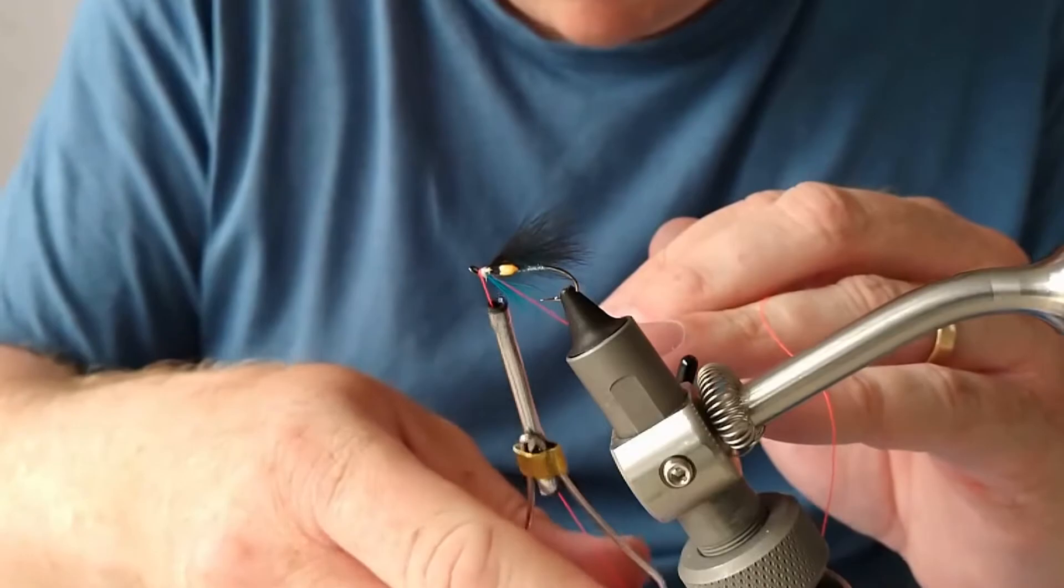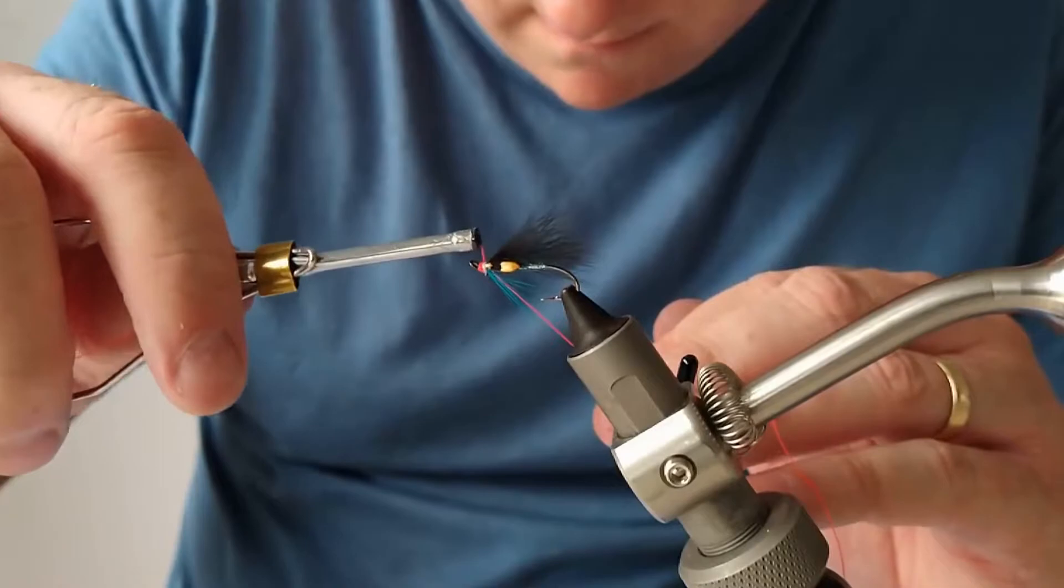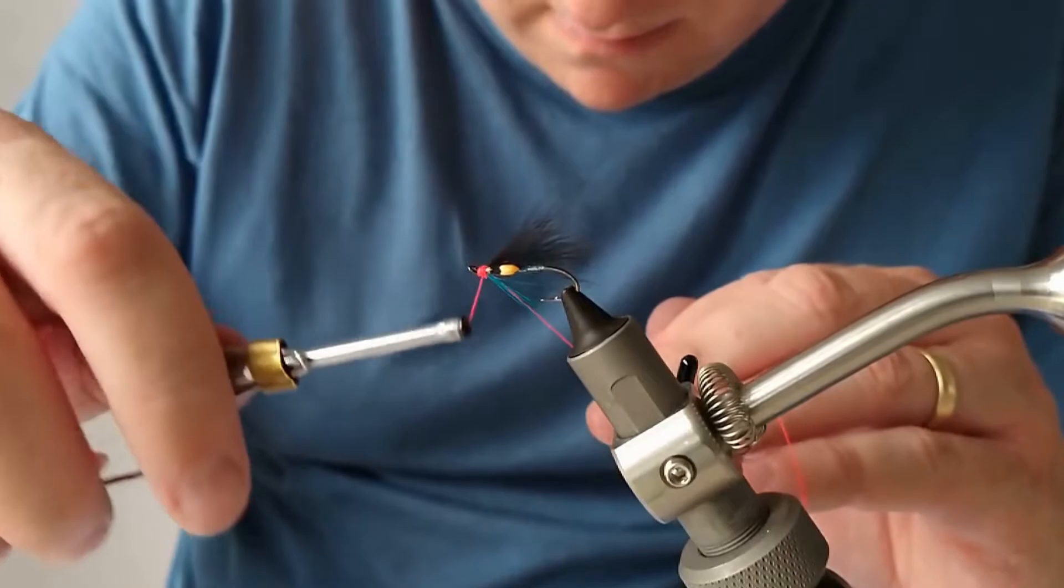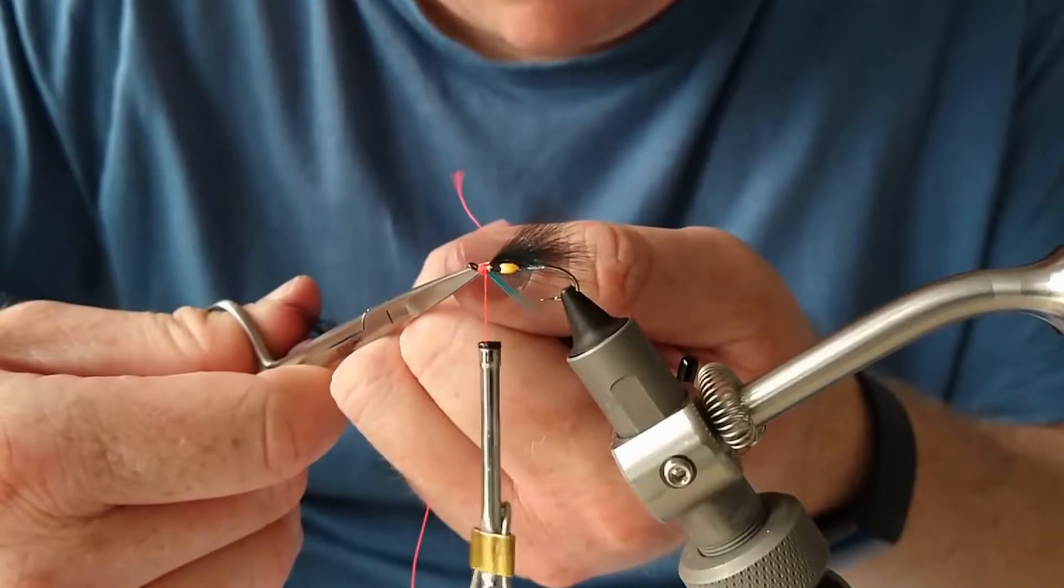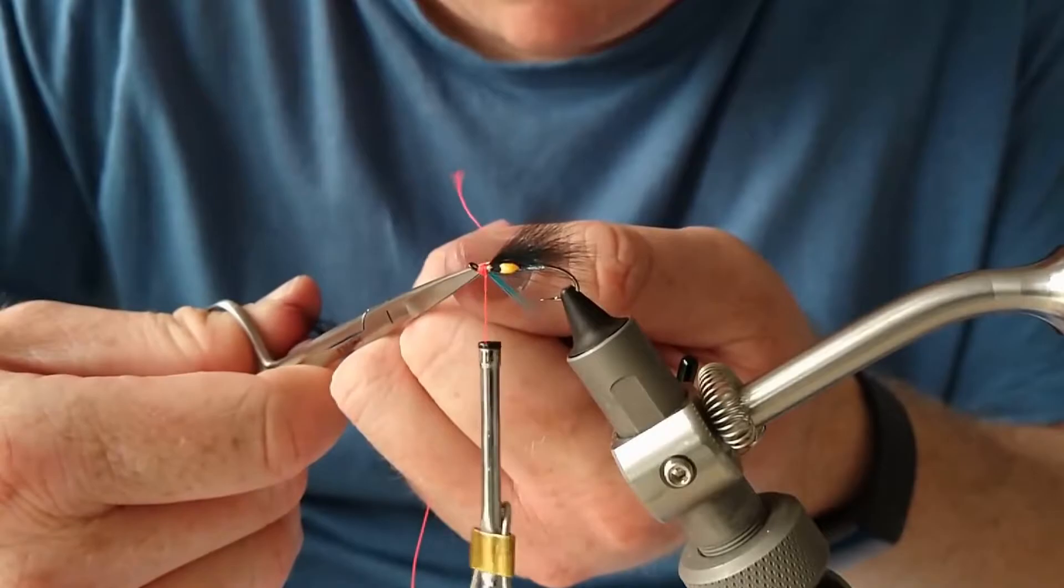So for the head I am going to use Glowbrite number four. Really shows up over that white thread.